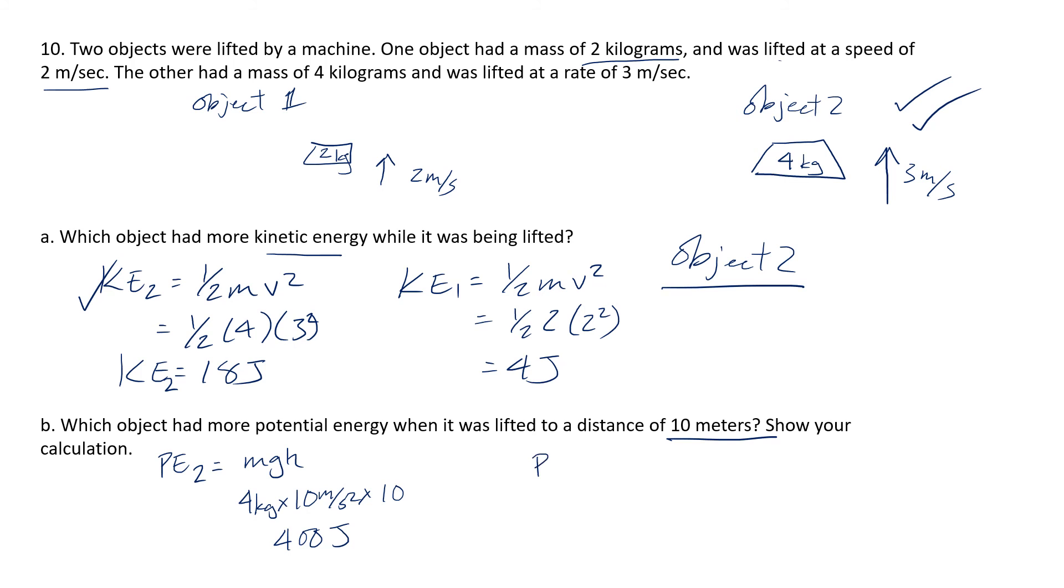As opposed to the potential energy of object one it's going to be again mgh and again g and h didn't change it's still going to be 10 meters a second squared and it's going to be 10 meters but my mass is way less. My mass is only 2 kilograms. All right so this one is only 200 joules. So again object two once again because it's so much more massive.